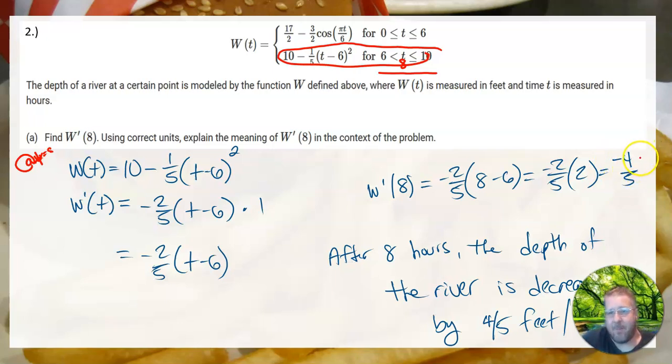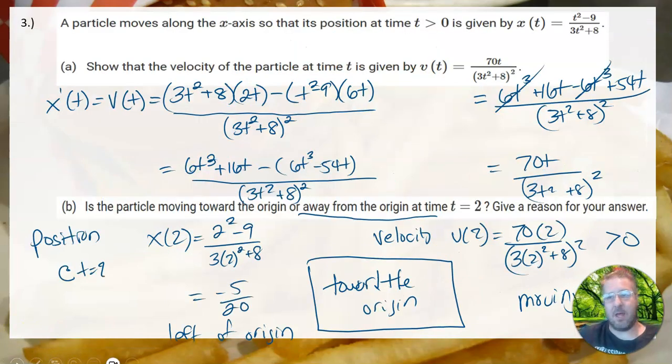And it looks like W'(8) is negative four-fifths. So after eight hours, the depth of the river is decreasing at a rate of four-fifths feet per hour. It's decreasing because it's negative. And I've said in multiple videos, anytime this is negative and you're giving a context, don't put a negative here. They always expect you to write increasing or decreasing, not the positives or the negatives.